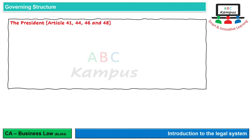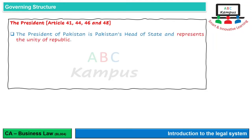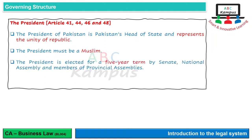President से related जो Articles यहां discuss कर रहे हैं वो हैं Article 41, 44, 46 and 48. President of Pakistan पाکستان کے Head of State ہیں، اور Unity of the Republic کو represent کرتے ہیں. President کے لیے requirement ہے کہ he must be a Muslim. President is elected for a five-year term by Senate, National Assembly and Members of Provincial Assembly - یعنی ان سب سے انہیں votes ملتے ہیں اور پانچ سال کے لیے appoint ہوتے ہیں.